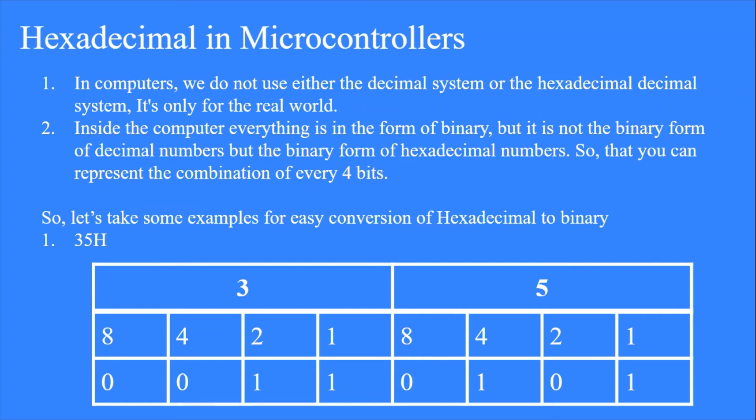So let's take some examples for easy conversion of hexadecimal to binary. Now you know every hexadecimal digit occupies 4 bits in binary. So here you have 2 numbers, so it occupies 8 bits in binary. First let's take the digit 5. We will break it down into powers of 2. 5, as I said earlier, it is 4 plus 1. So under the place value of 4 and 1, we will put a 1, and in the rest of the places we will put a 0. Similarly for 3, it is 2 plus 1. Under the place value of 1 and 2 we will put 1, 1, and in the rest 4 and 8 we will put a 0. So the conversion of 35h to binary is 00110101.